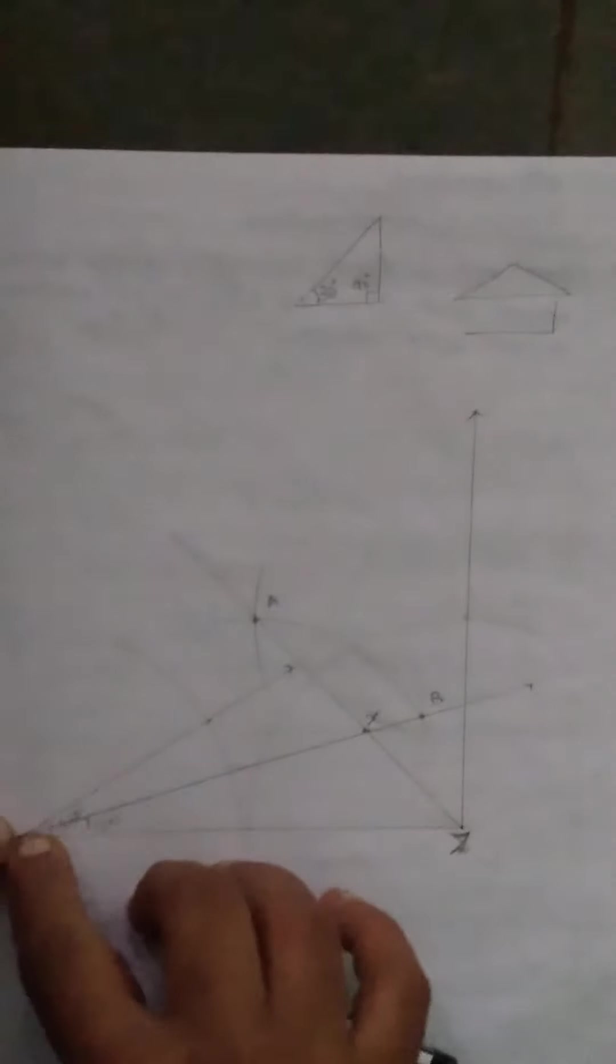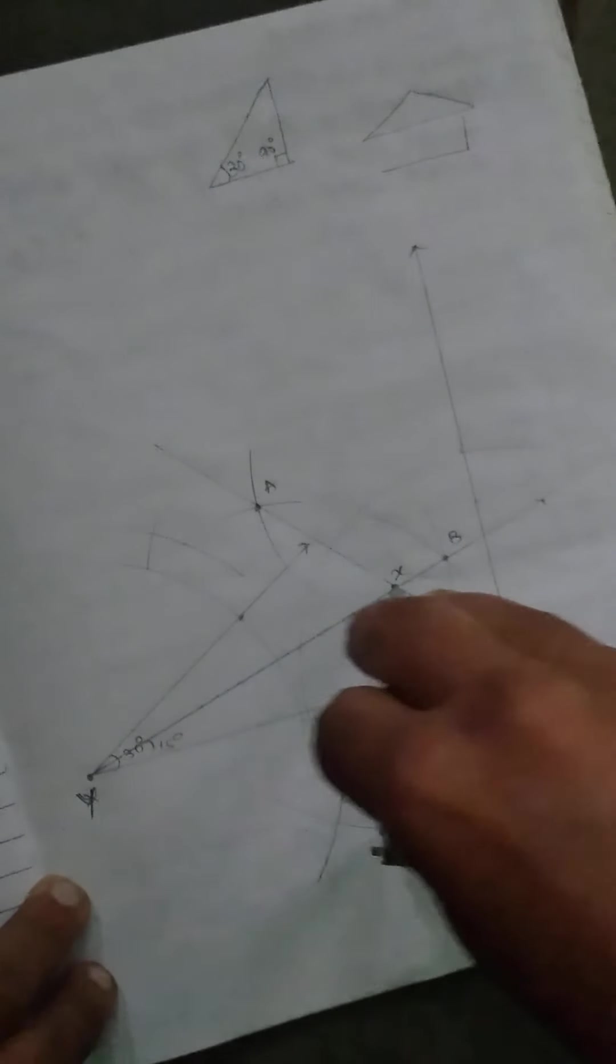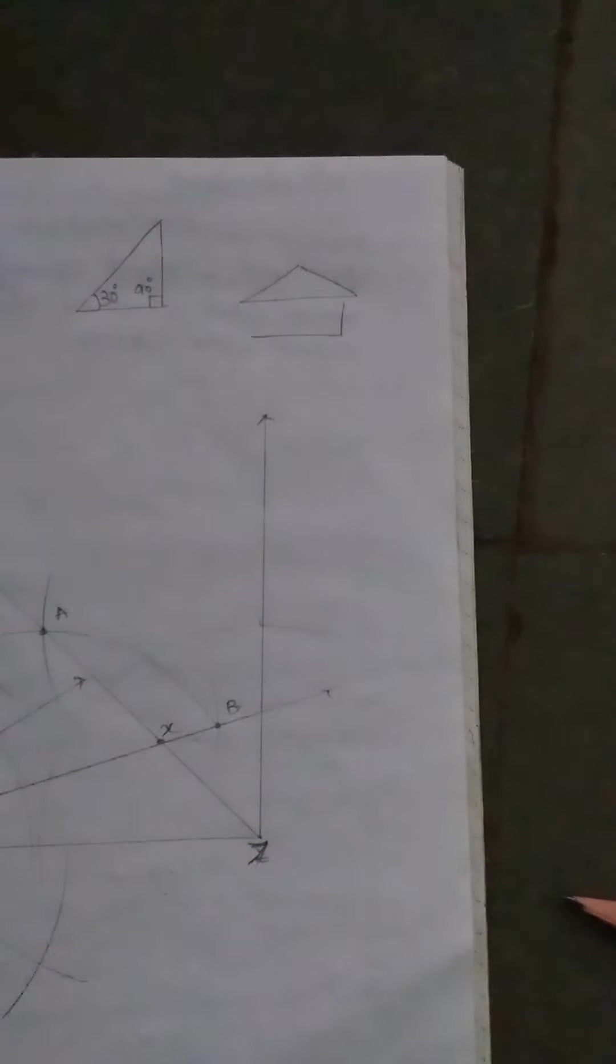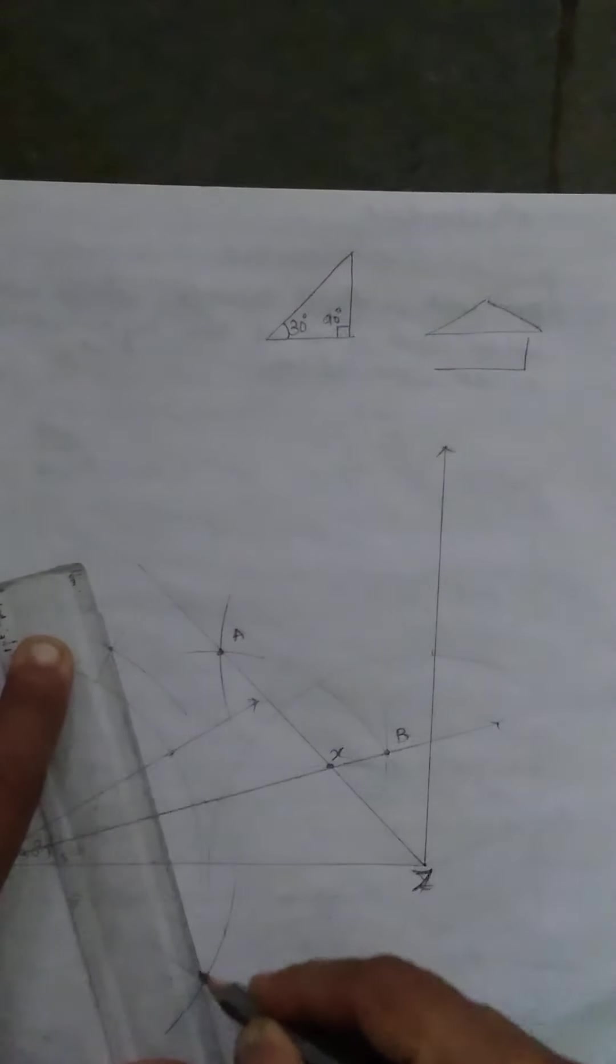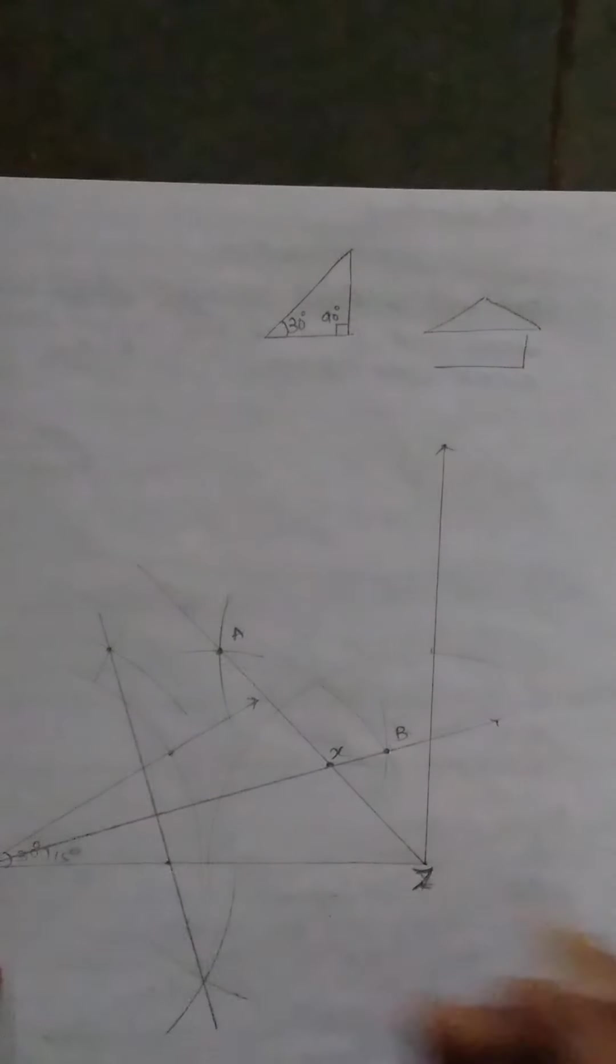Now bisect this XY line. To bisect take more than half of this radius, draw an arc. And join that line while drawing a perpendicular line. This line cuts Y and Z in this point. Next.